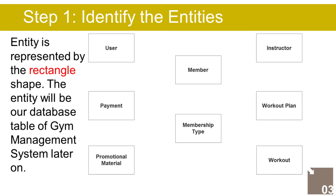Step 1: Identify all entities. An entity is represented by the rectangle shape and will become our database tables in the gym management system. In the gym management system we have the following entities: 1. User, 2. Member, 3. Membership Type, 4. Instructor, 5. Workout Plan, 6. Workout, 7. Payment, 8. Promotional Material.